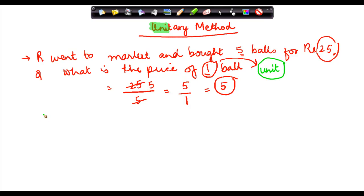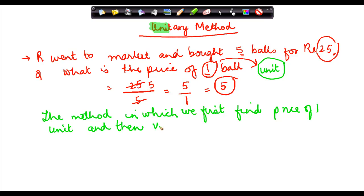So the method in which we first find price of one unit and then value of desired number of units is called unitary method.